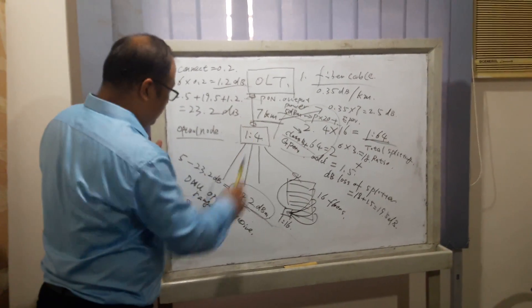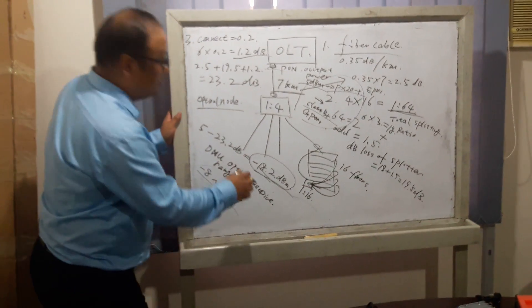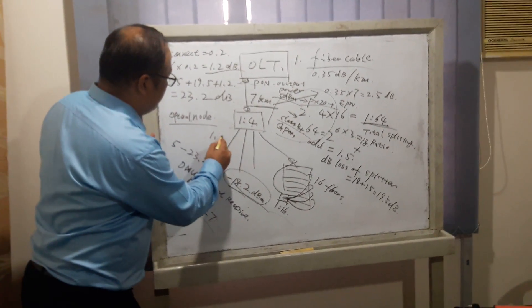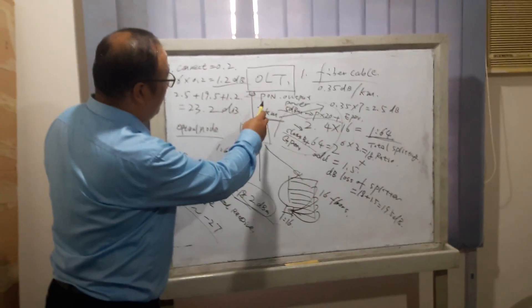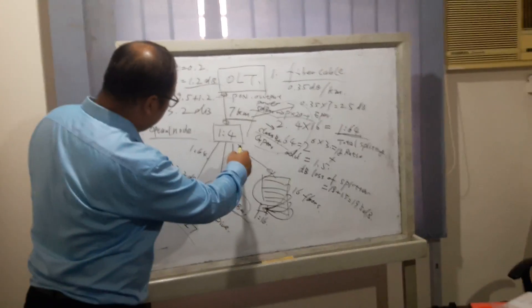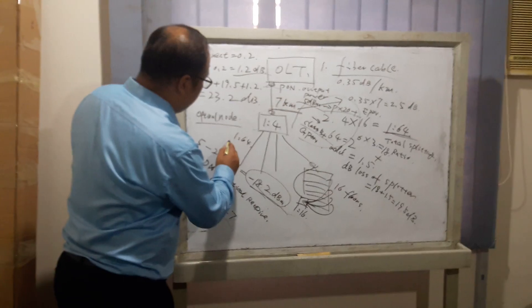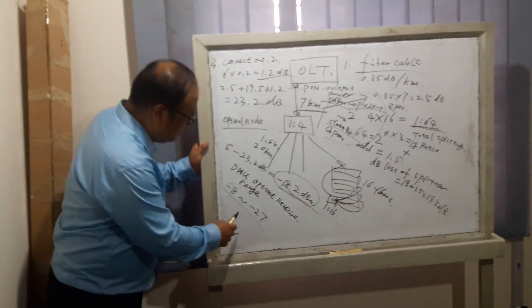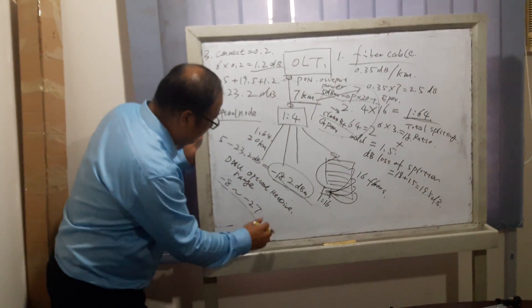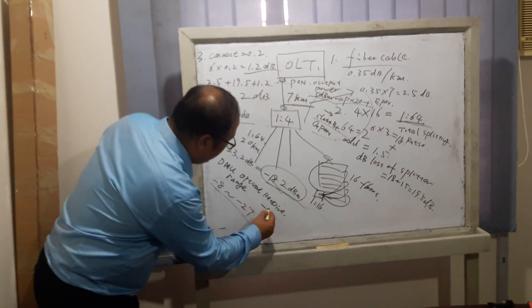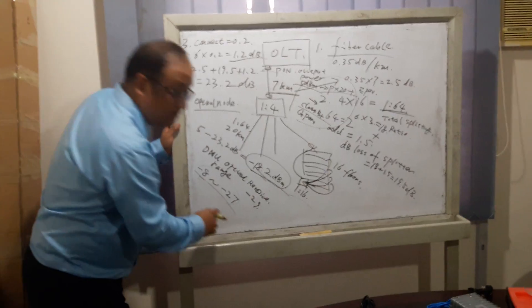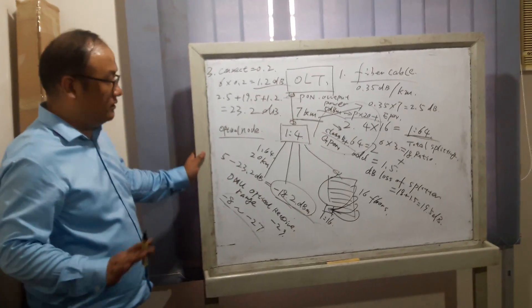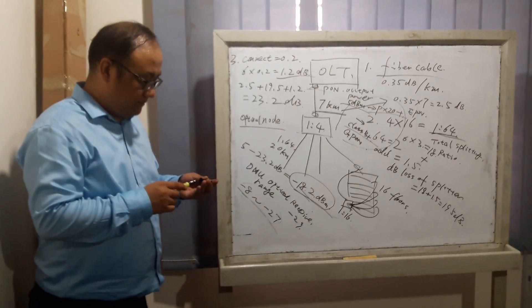If your calculation shows it's out of this range, maybe the splitter ratio is too high at 1:64, or the fiber is too long, perhaps 20 kilometers. That would exceed this range. For example, the received optical power may reach -29 dBm, and the ONU may not work. That's all, thank you.